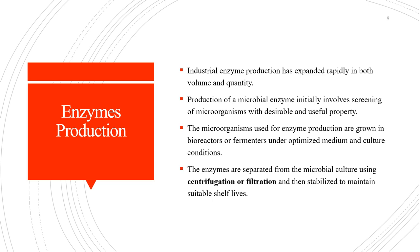The microorganisms that are used for enzyme production are grown in bioreactors or fermenters under optimized medium and culture conditions. Both solid state and submerged fermentation methods are used industrially. The enzymes are separated from the microbial culture using centrifugation or filtration and then they are stabilized to maintain suitable shelf life. In this lecture, I will be talking about enzyme production process starting from the raw material to the finished product.